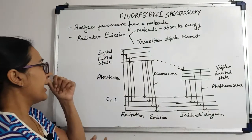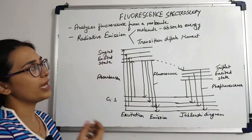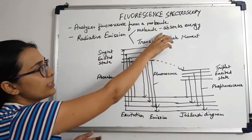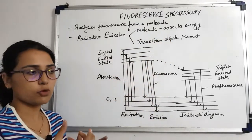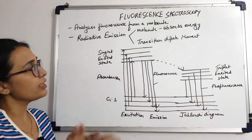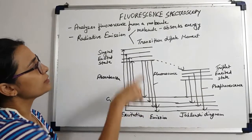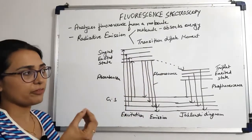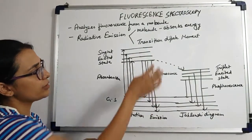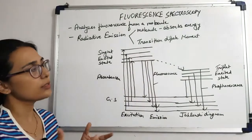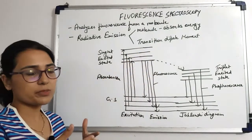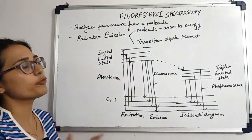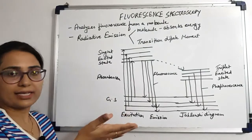Two things are required. The radiative emission or the fluorescence happens when a molecule or the electron in the molecule absorbs energy, and this energy which is absorbed has to be at a particular wavelength where the molecule has a transition dipole moment. The energy should be absorbed at a wavelength where the electrons present in the molecule can move among different states — from a ground state to an excited state.